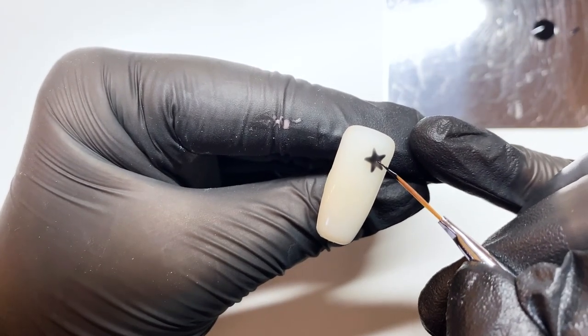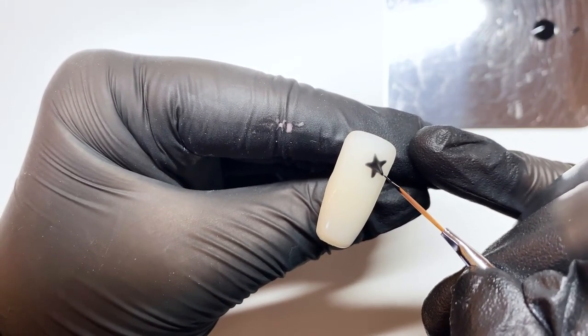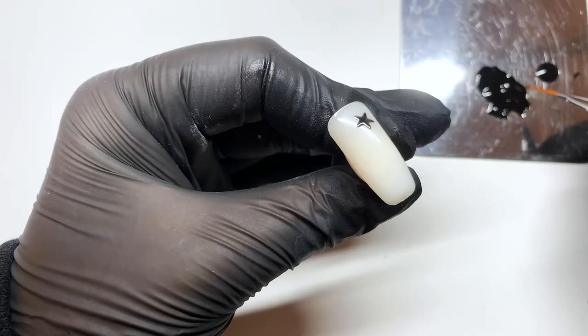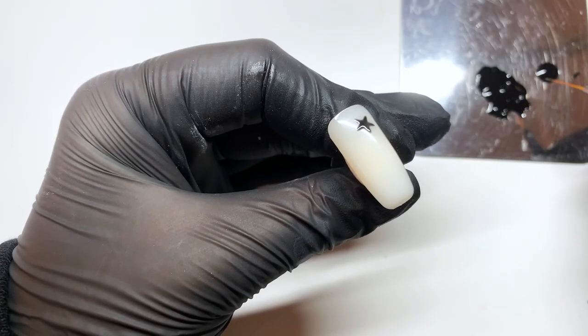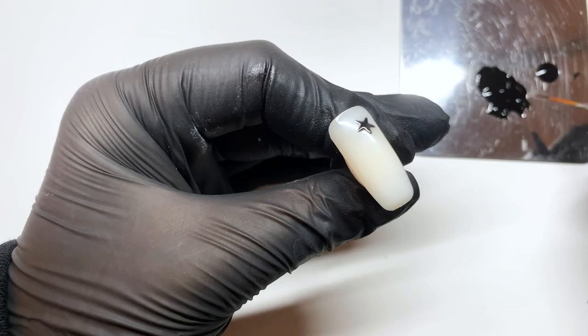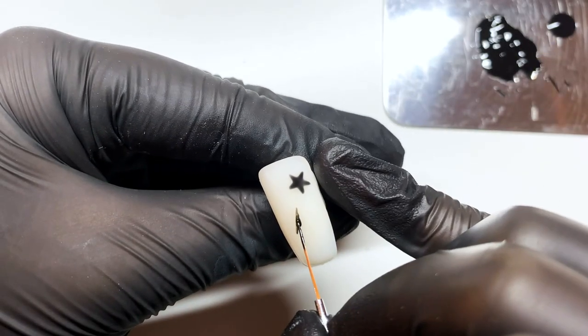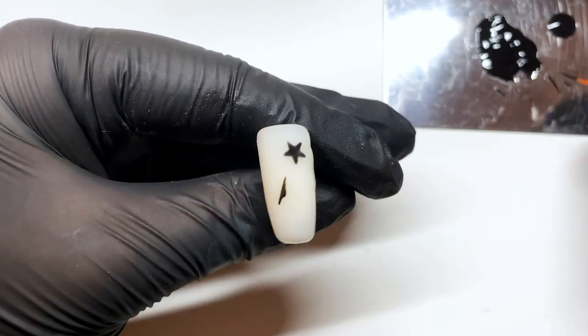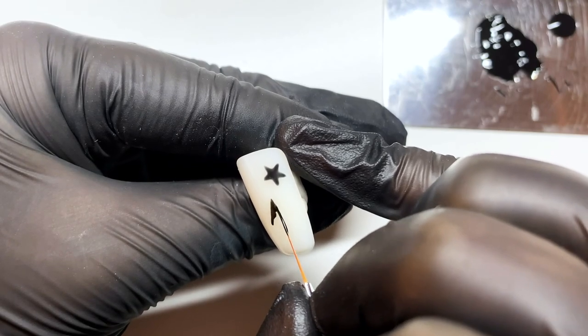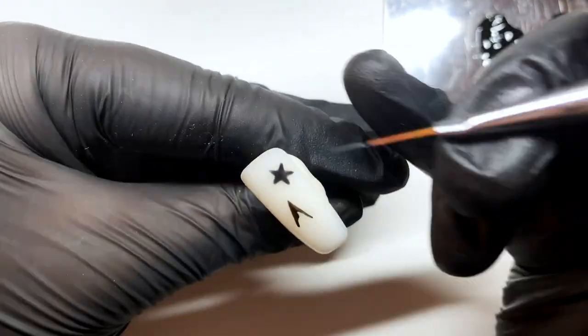As you can see the color is slightly patchy in certain areas and the lines aren't as clean and precise as I would ideally want them to be. Next I'm going to show you the same design but in high pigment gel. I'm just taking a little bit of product onto my brush as you don't need a lot when dealing with high pigment gel, as it's better to build with it as you'll be able to get cleaner lines with less on your brush.